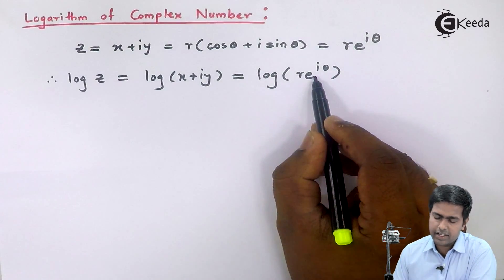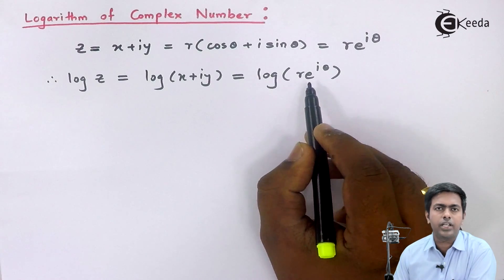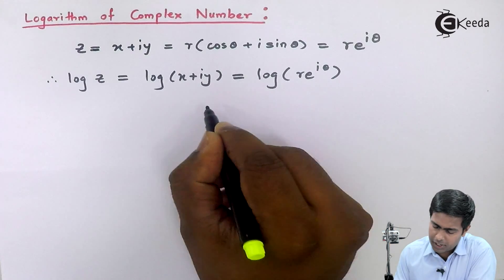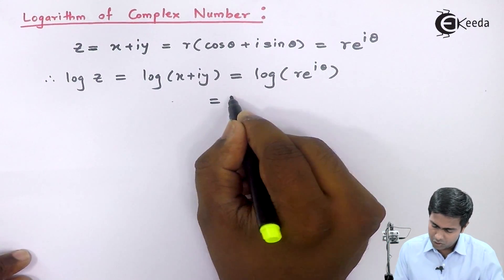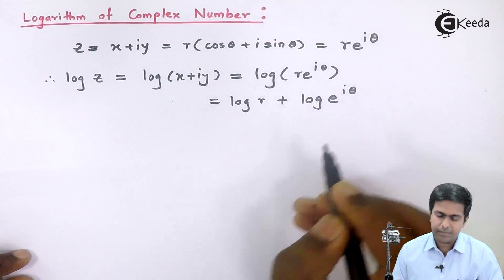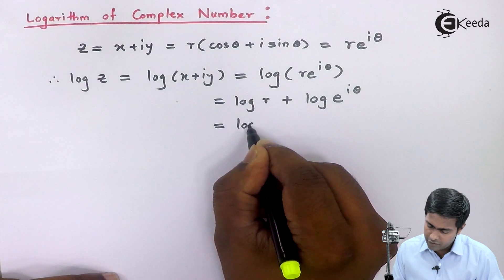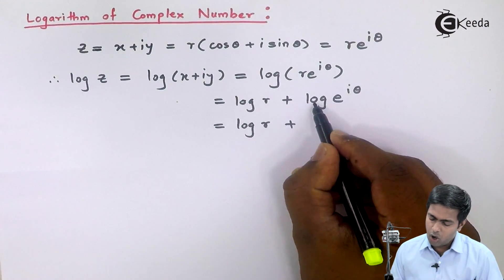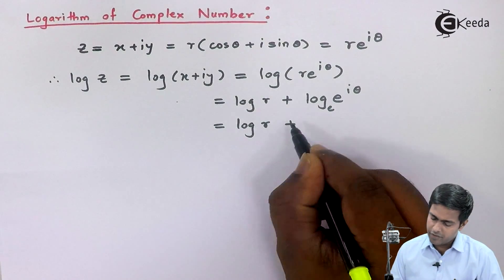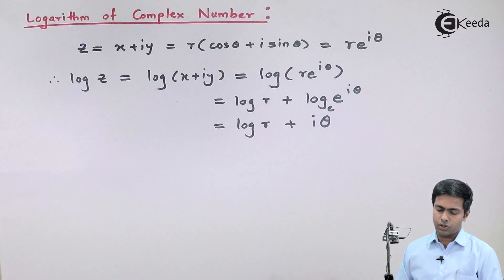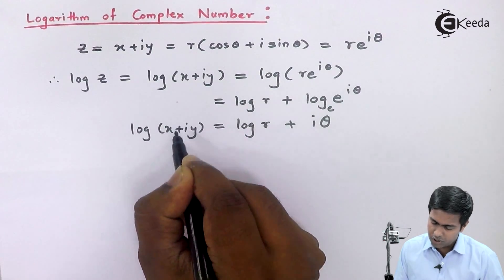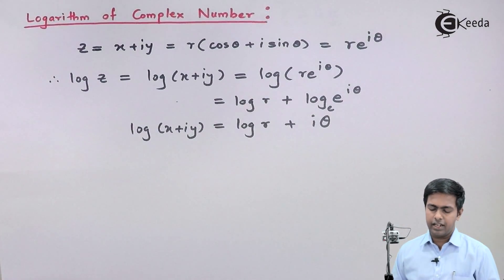Here r and e are multiplying each other, so I will use the logarithm formula: log(a × b) = log a + log b. This gives us log of r plus log of e raised to i theta. Now log of r remains as it is, whereas the log and e cancel since the base of the log is e, and we get i theta. So the formula for log of x plus iy is equal to log r plus i theta.